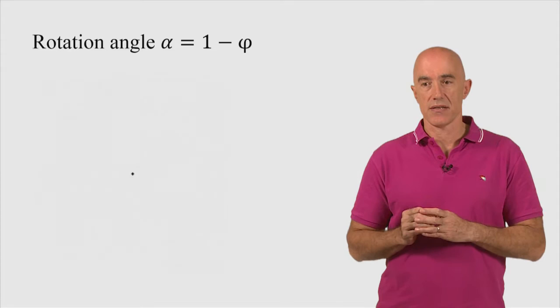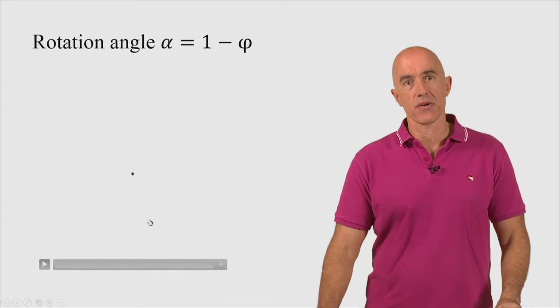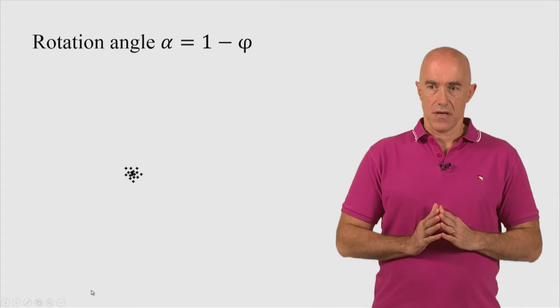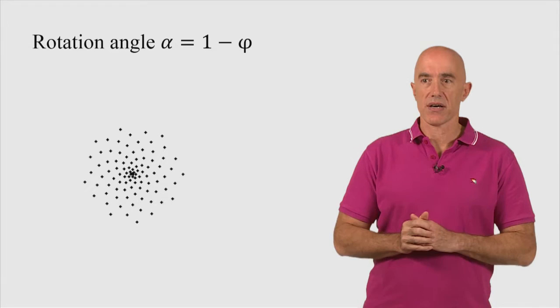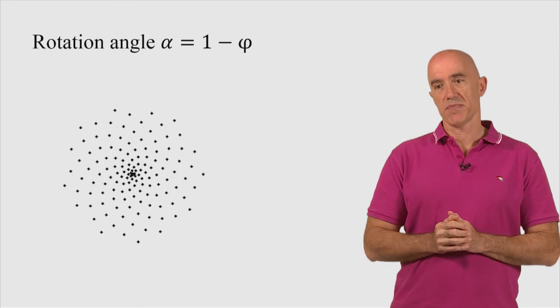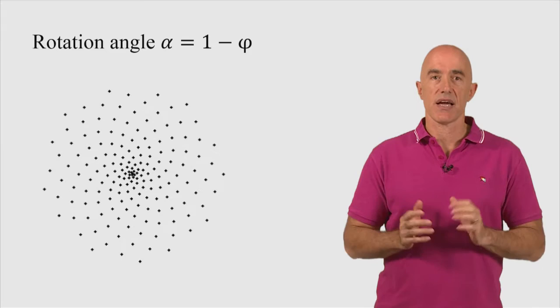So what will this angle look like then in our model of the sunflower head? So the florets are moving out. You don't see lines now because there's no good rational approximation to the golden angle. But we see spirals. Now we're starting to see spirals. And we're starting to see spirals in both directions just like our sunflower head. So this is starting to look a lot like our sunflower head.